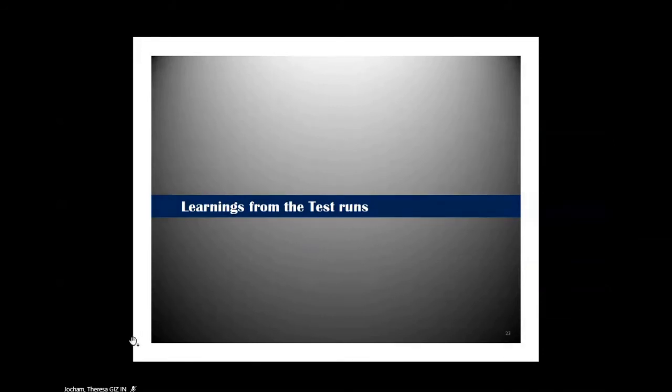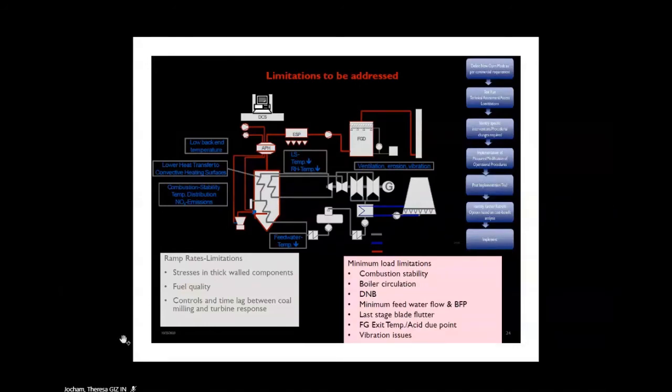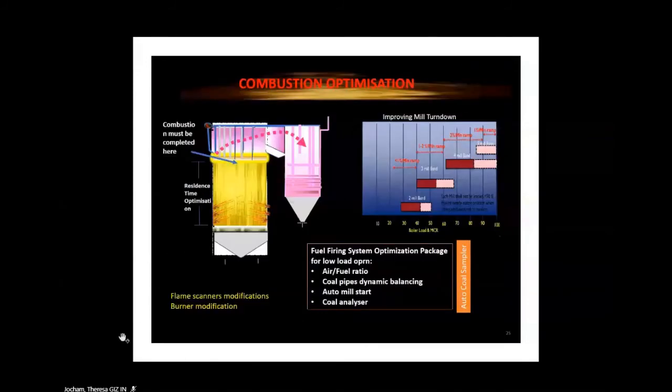Criteria was like base load, those units which don't have the coal. They just cannot run on flexible mode. These are the main areas where you find flexible operation problems. This is based on all the test runs. We have had around a number of tests, seven, eight test runs in many stations and two are ongoing. So these are some of the common findings. Combustion is very important, because turbine side, you have very few problems. Only you need to check your temperatures. And again, the vacuum, you need to maintain water chemistry side, but combustion optimization is the primary thing.